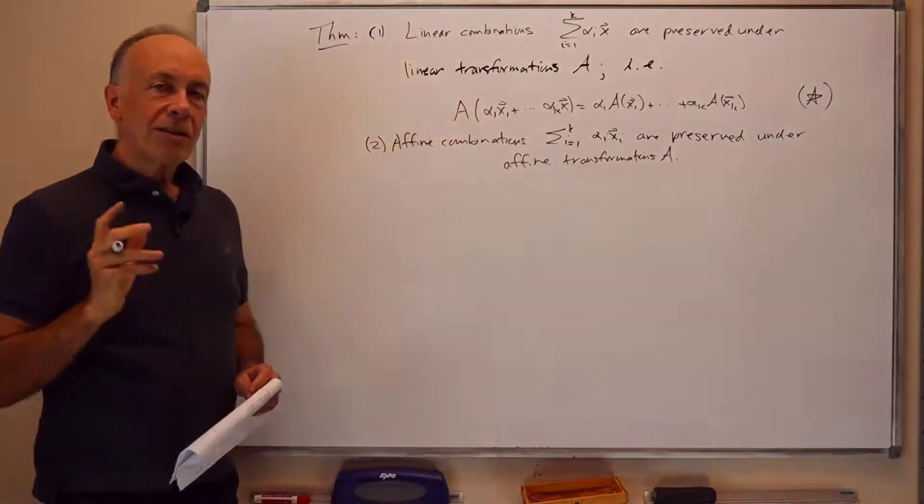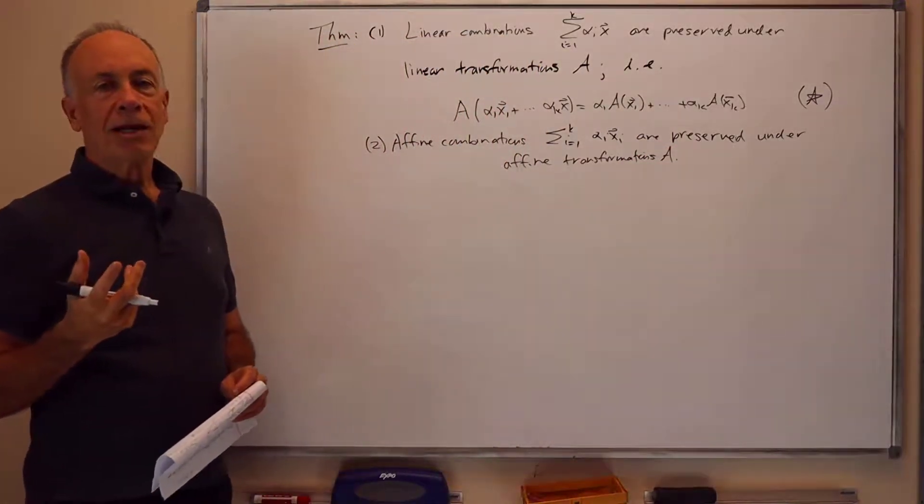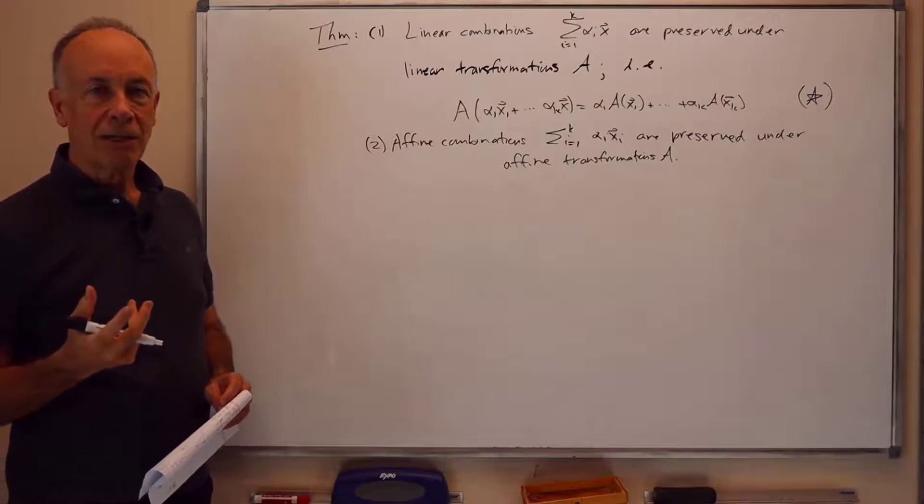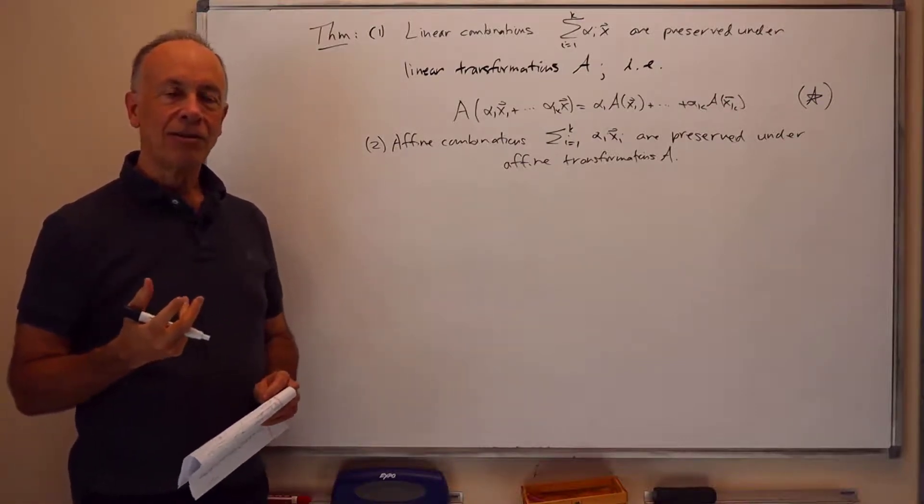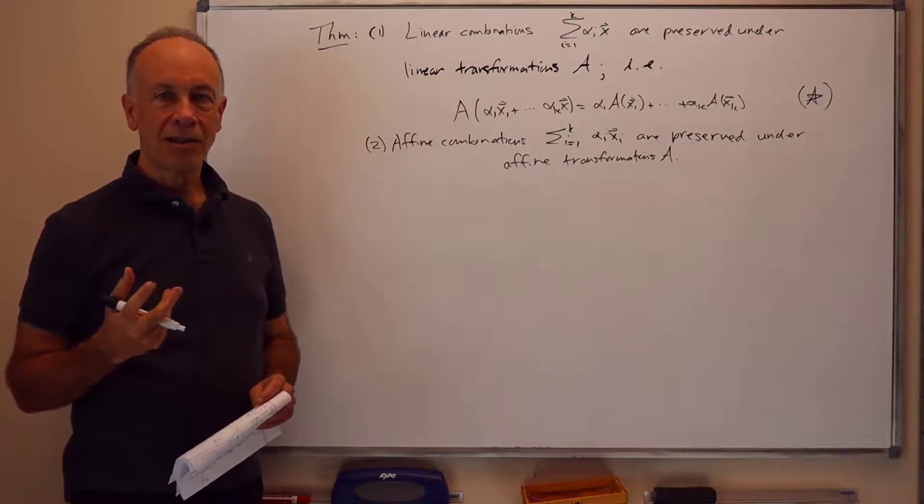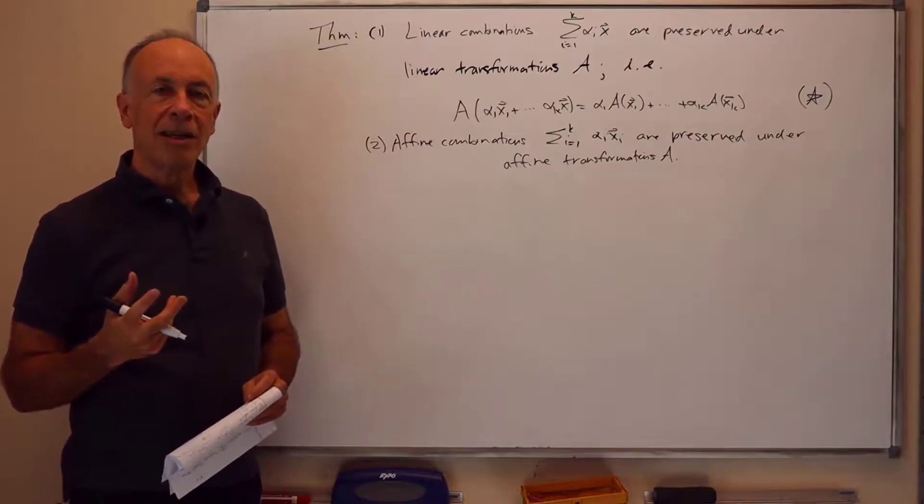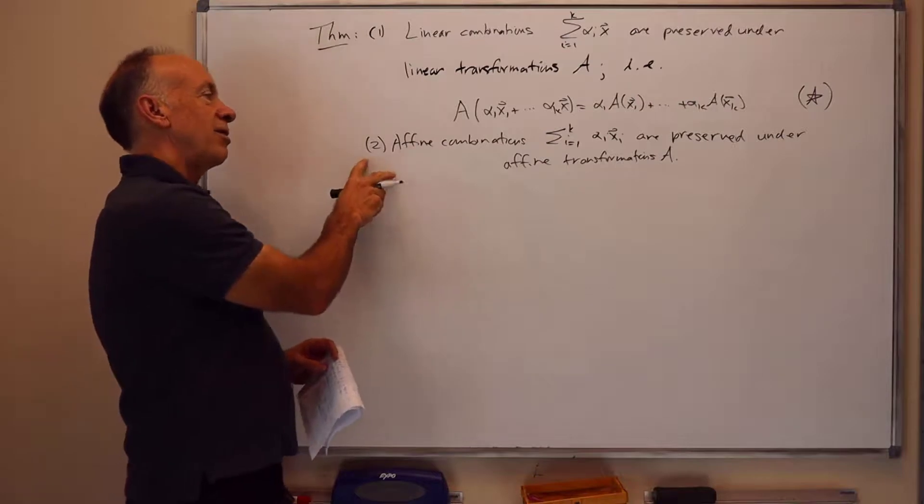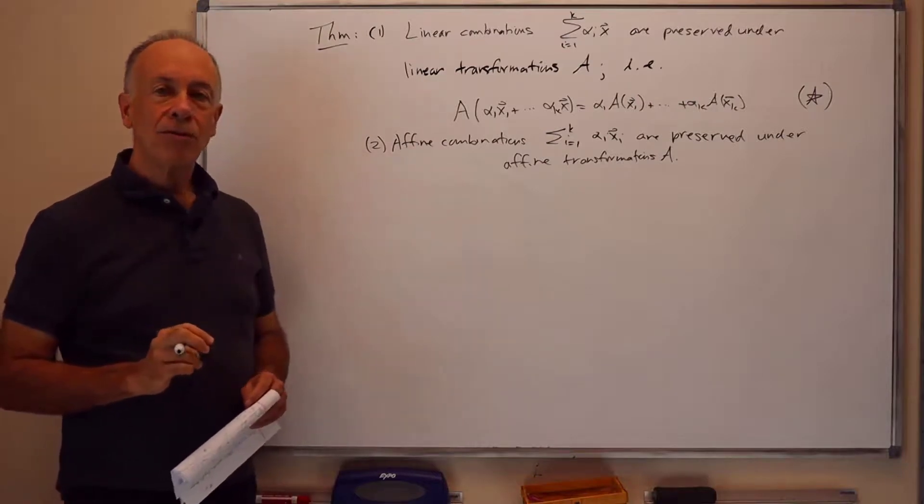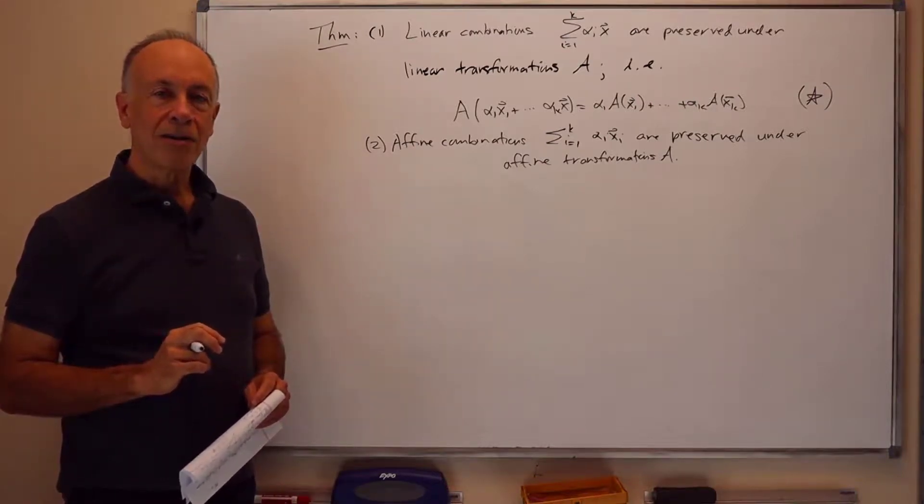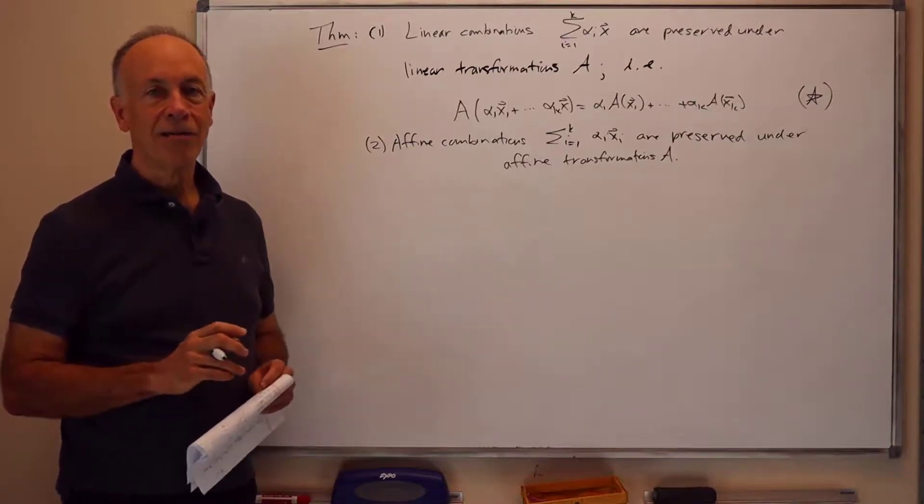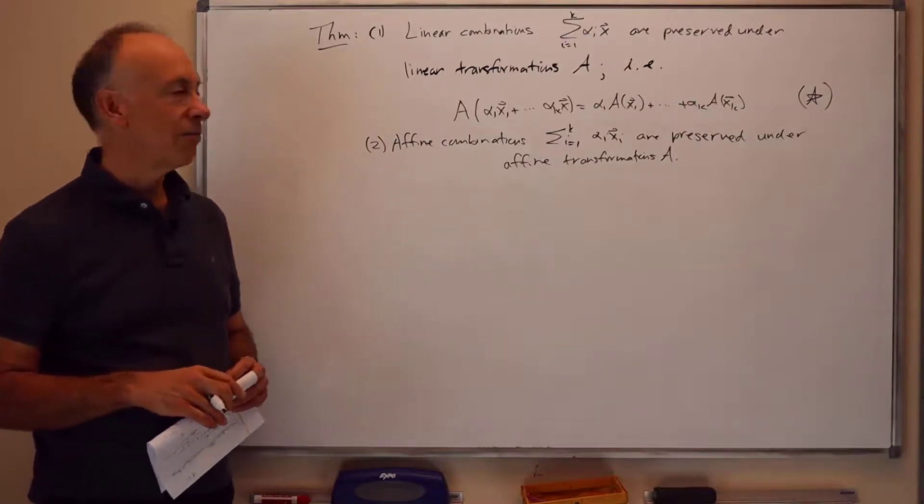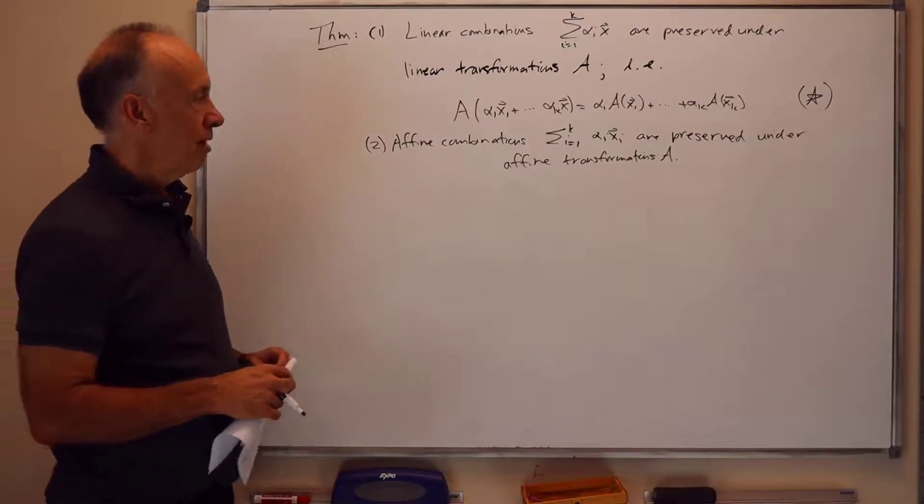So the point of this theorem is, we're frequently moving things around in space using affine transformations. And in particular, we're moving around things like vertices of triangles or other points on the control items. And so part 2 just tells us that if we move, say the points of a triangle around according to affine transformation, we also move the entire interior of the triangle around by the affine transformation.